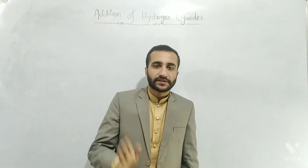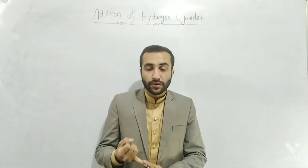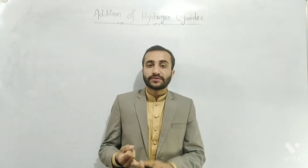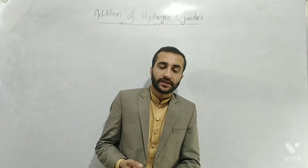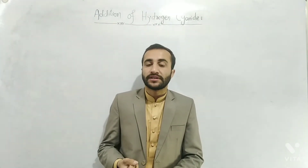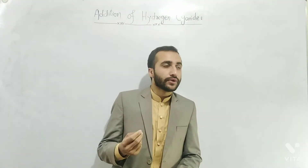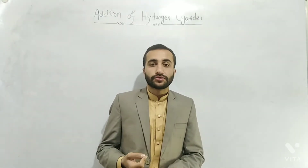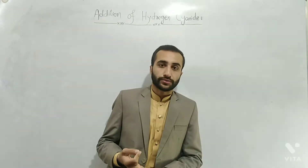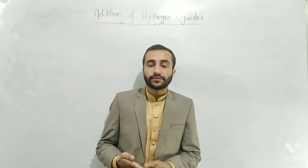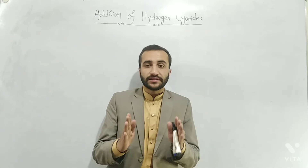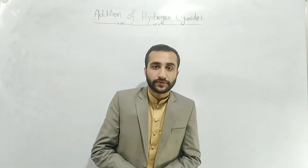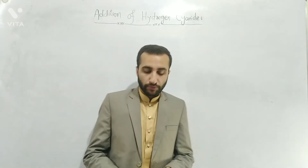You will get four things at the end of this lecture. The first one is how hydrogen cyanide is added in carbonyl compounds. The second one is the proper mechanism for the addition of hydrogen cyanide in aldehydes and ketones. The third one is a term called 'in situ.' The fourth one is the proper mechanism for the acidic hydrolysis of acetaldehyde cyanohydrin and how lactic acid is formed.